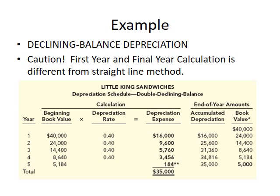The formula uses the beginning book value for each year multiplied by the depreciation rate. In year one, the beginning book value is the original cost of $40,000. Under straight-line, the rate is 1/5 = 20%; under double declining balance we double it to 40%. Year one: $40,000 × 40% = depreciation expense of $16,000. We debit depreciation expense $16,000 and credit accumulated depreciation $16,000, reducing book value from $40,000 to $24,000.